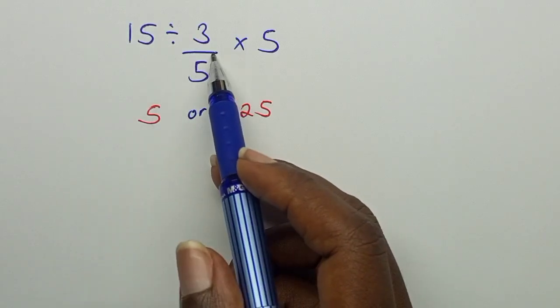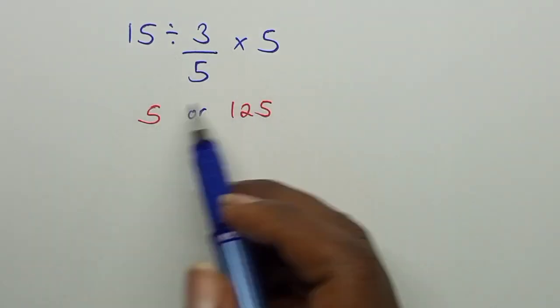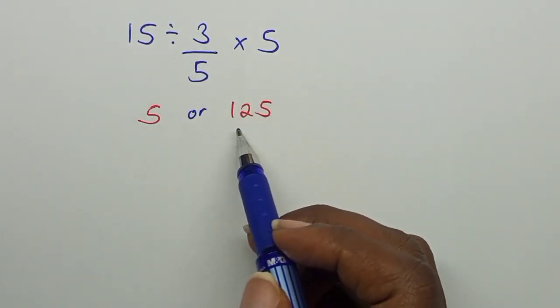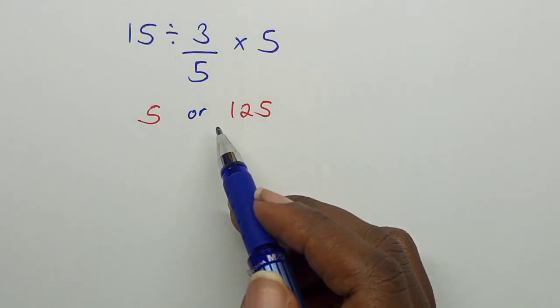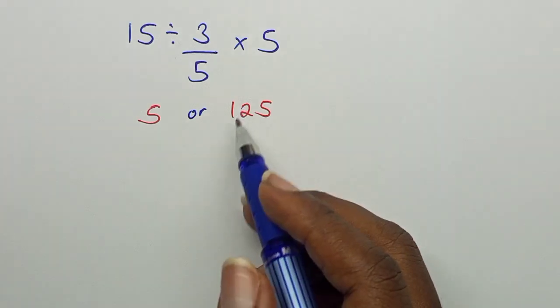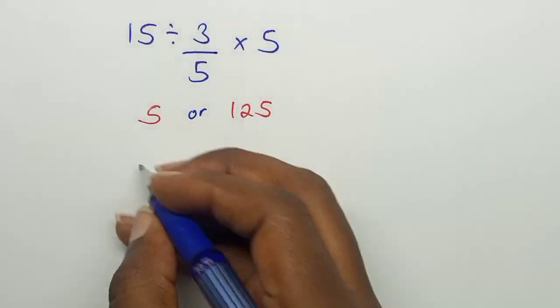15 divided by 3 over 5 times 5. When you work it out, is your answer 5 or 125, or is it totally a different answer? Pause this video, work it out, and see the answer you get. Then comment down in the comment section what you got or what you think the answer is.